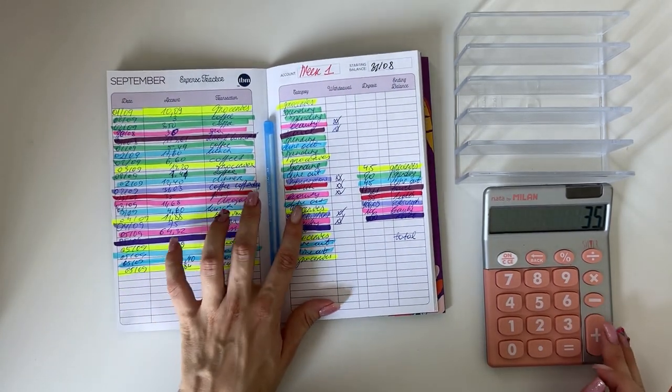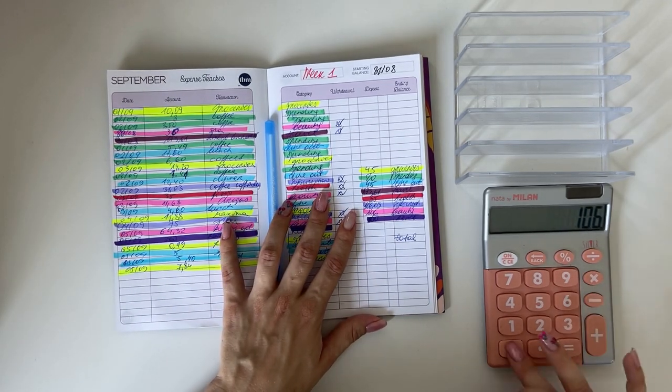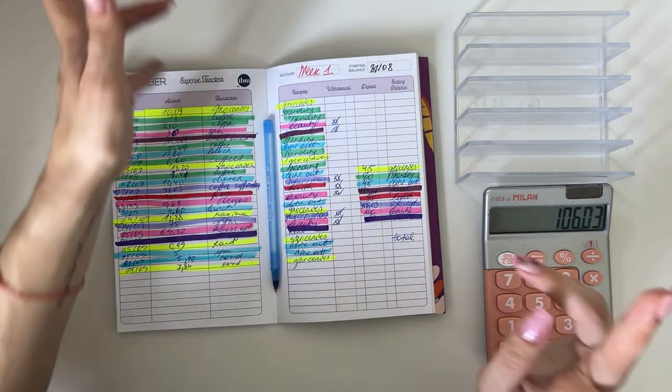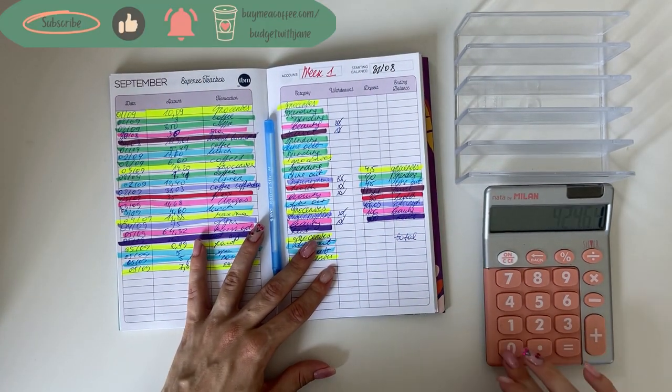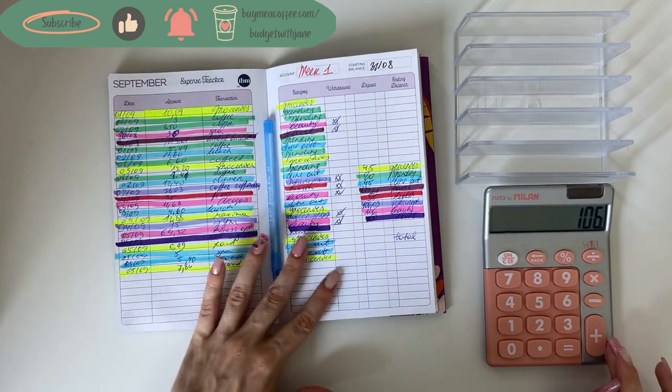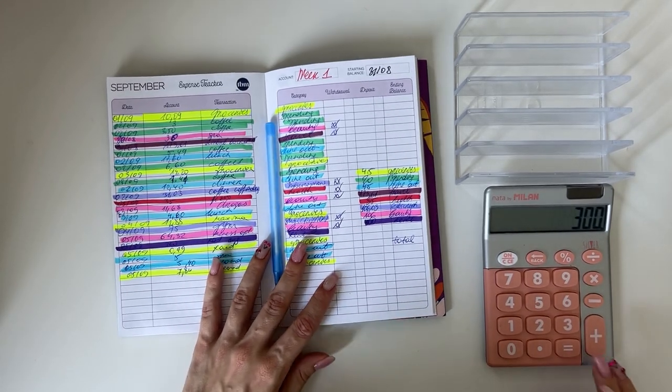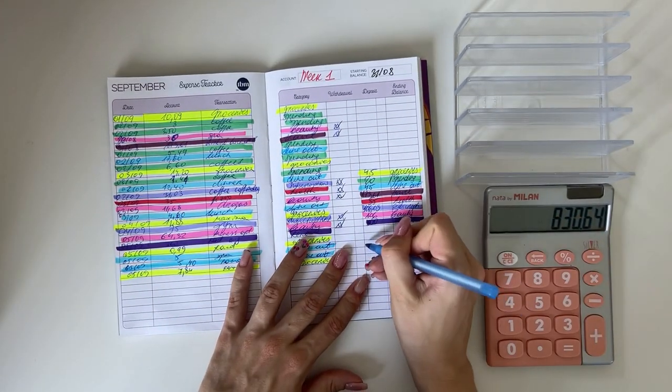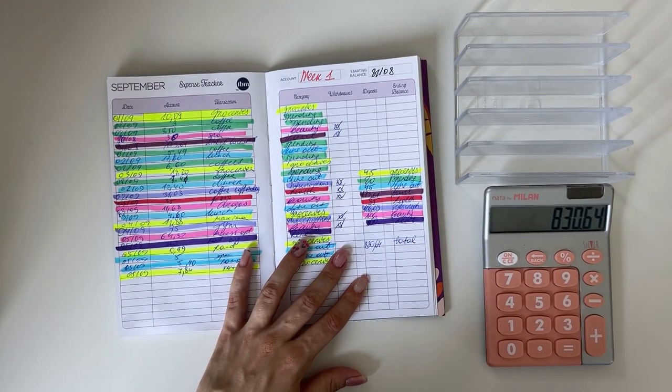35 for health, I went to a massage. 106.03 was in subscriptions, so I paid for my monthly coffee subscription and the gym membership. 106 went into beauty, I went to a spa. I bought some beauty products because there were very good deals, and 300 went into rent. So in total it was a high spending week. We had 830 and 64 cents.